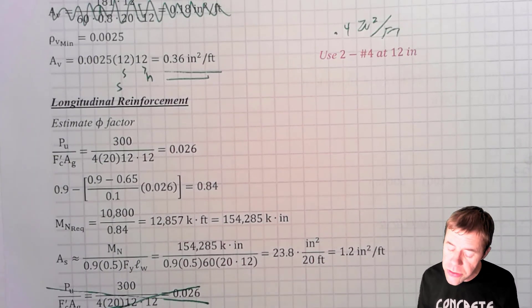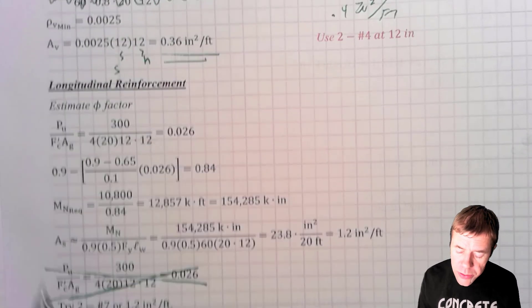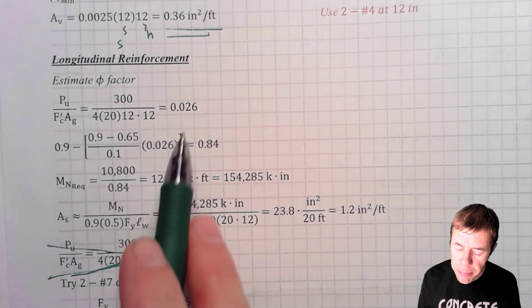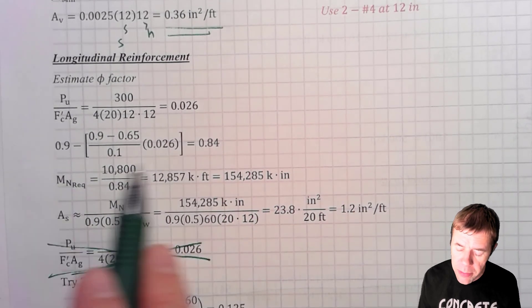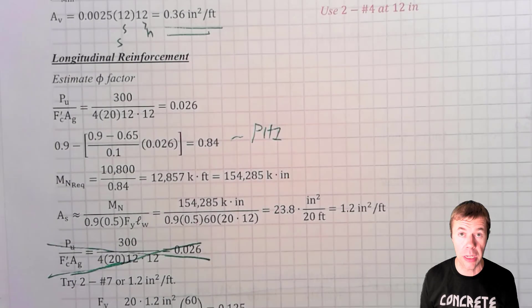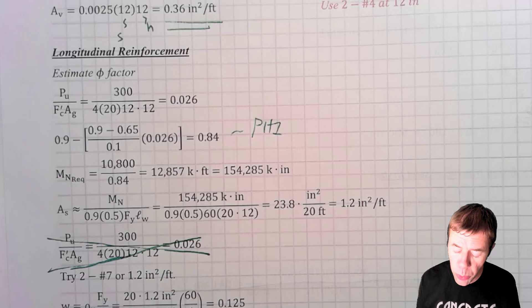The first thing I have to do is estimate my phi factor. So I take my axial load, which is 300 kips divided by f'c times my area gross. I get 0.026 and I do all of this to find my phi factor. This is my phi factor that I'm going to be using. And it's going to be less than 0.9. It's 0.84.